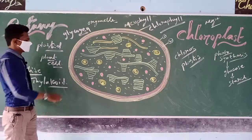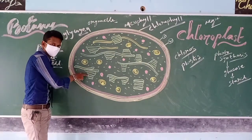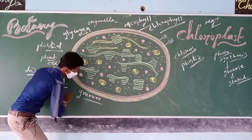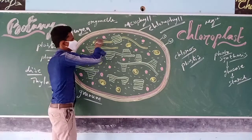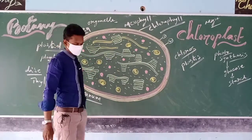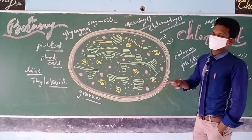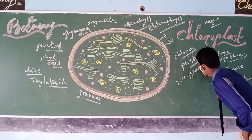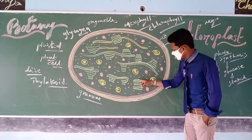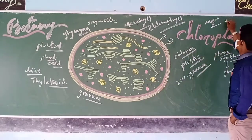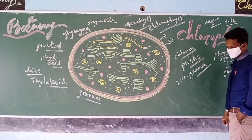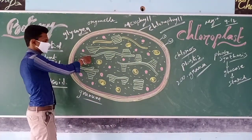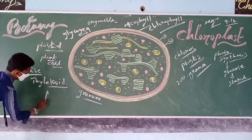Each disc is known as a thylakoid membrane. These thylakoid membrane discs are arranged in a row, and each row is known as a granum. Around 200 such groups of grana are located inside the chloroplast — grana is plural, granum is singular. In each granum, around 9 to 12 discs are located. All grana are interconnected with the help of special channels called thylakoid channels or fret channels.